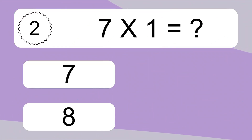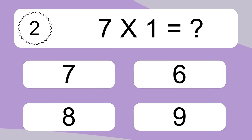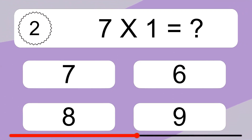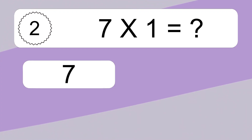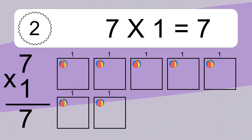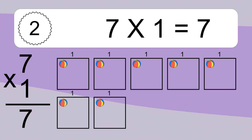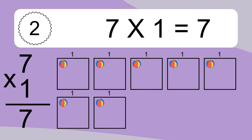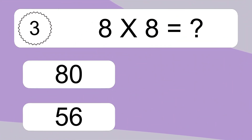Seven times one equals what? Seven times one equals seven. We have seven boxes, and each box has one colorful ball inside. If you count all the balls in all the boxes together, you will have seven times one balls. This equals seven balls.